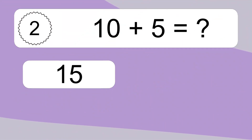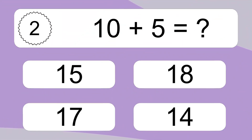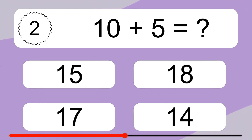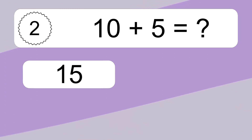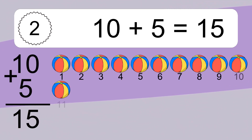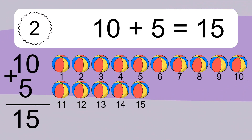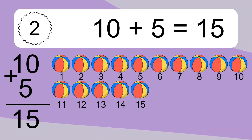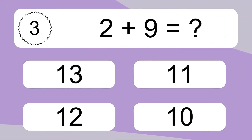10 plus 5 equals what? 10 plus 5 equals 15. Let's count it: 1, 2, 3, 4, 5, 6, 7, 8, 9, 10, 11, 12, 13, 14, 15.